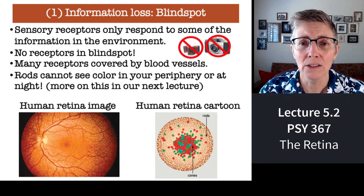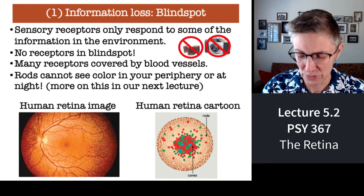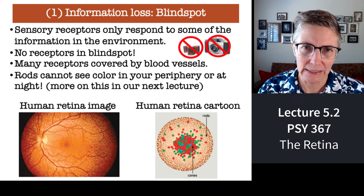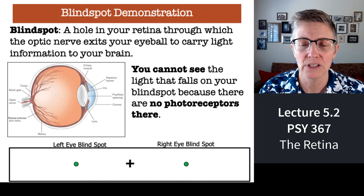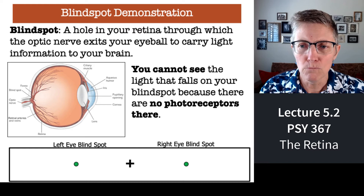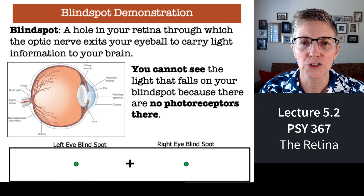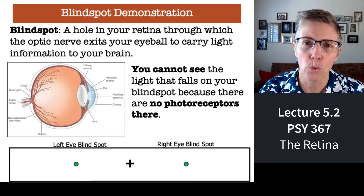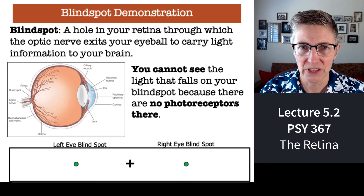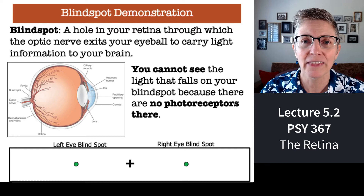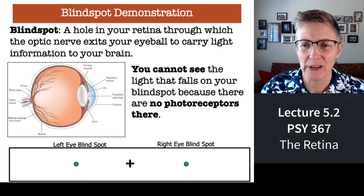Here's the thing: rods are colorblind. Did you know you're colorblind? You are — most of your vision is colorblind. In an in-person lecture, I would pass out sheets of paper with a drawing like the one at the bottom of the slide so we could all experience seeing our blind spot. When you move the paper to the right place, one of the green dots will disappear — that green dot disappears when it falls on your blind spot, and you have one in each eye, which is why there are two dots. For this class, there are online blind spot demonstrations under the activity section that you'll participate in later.